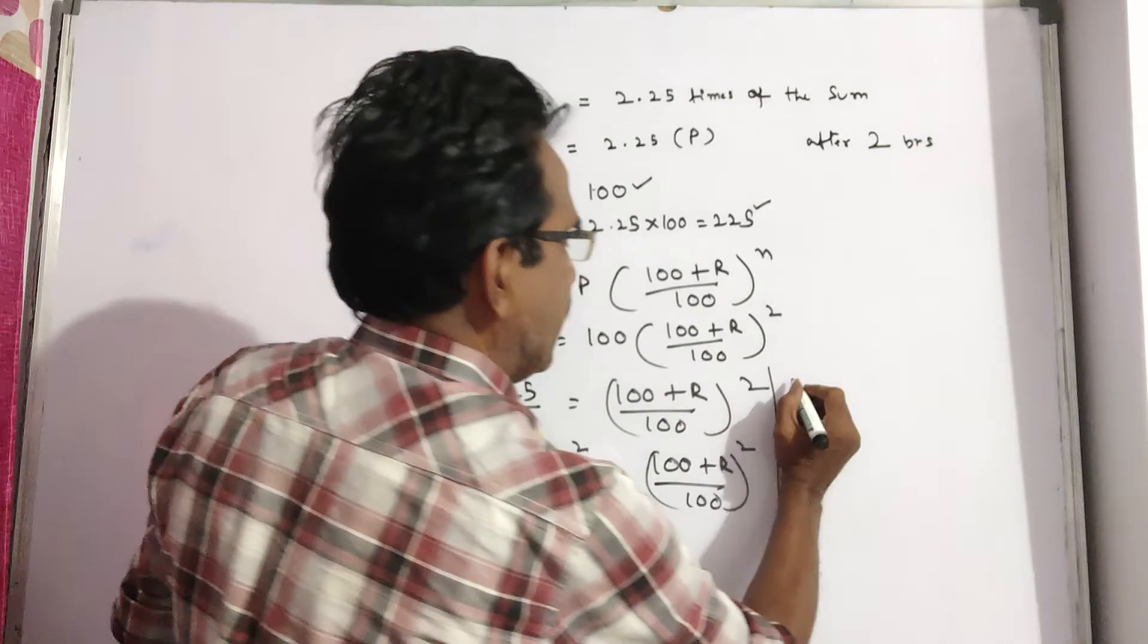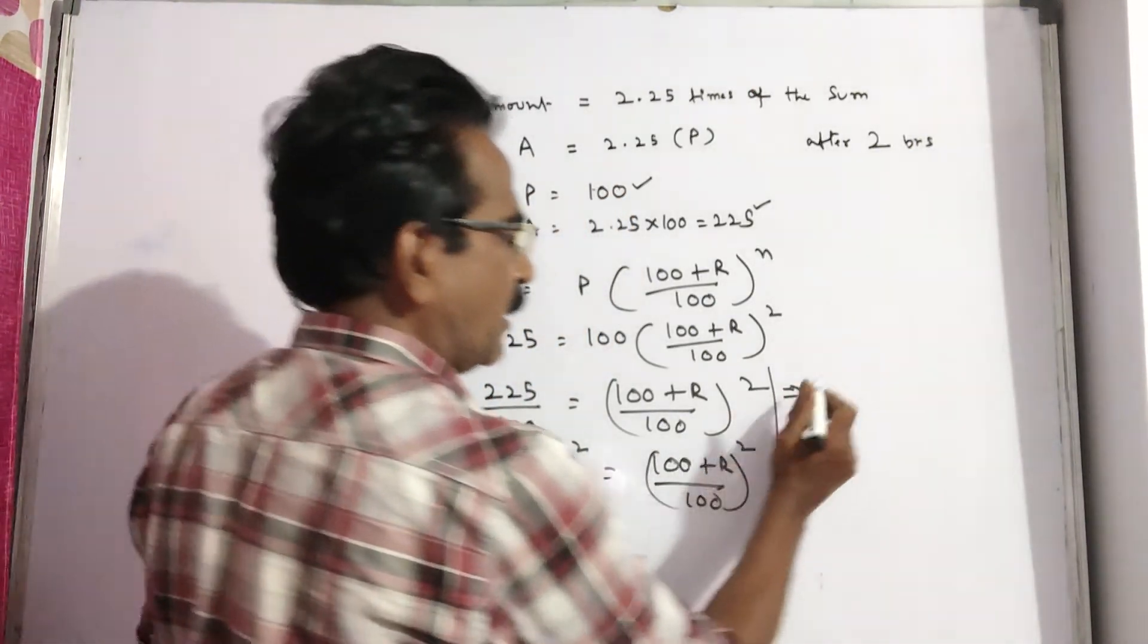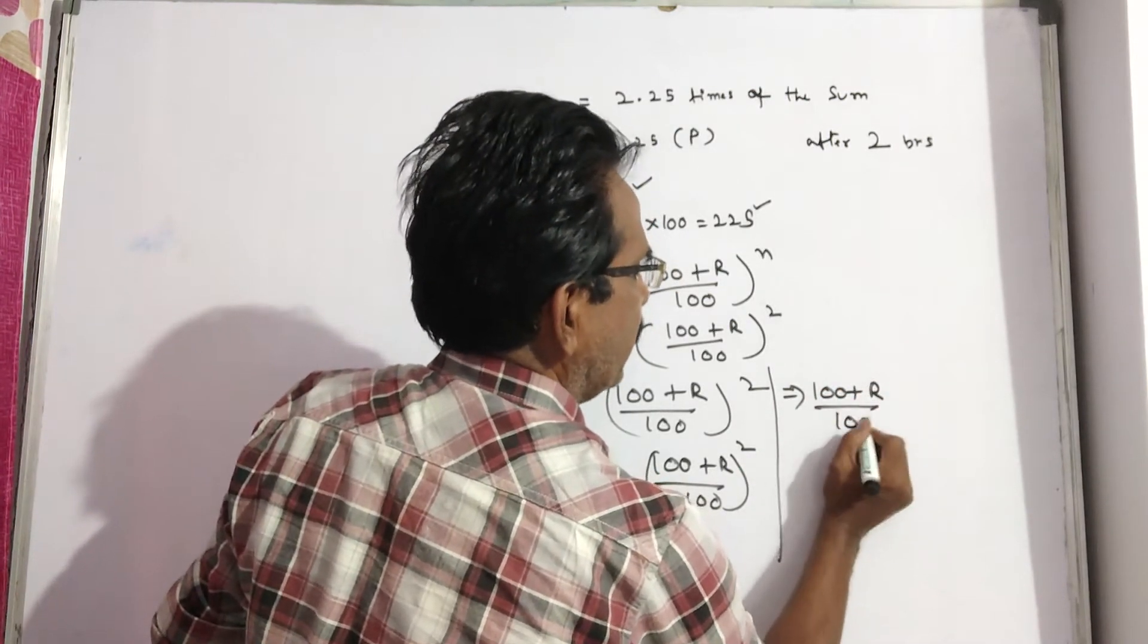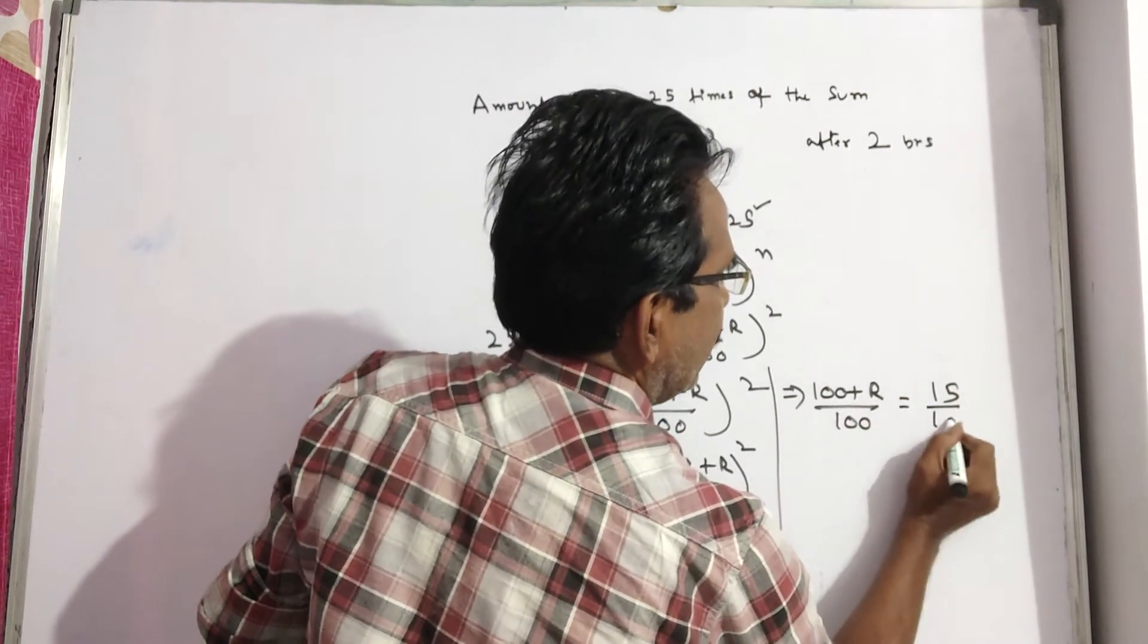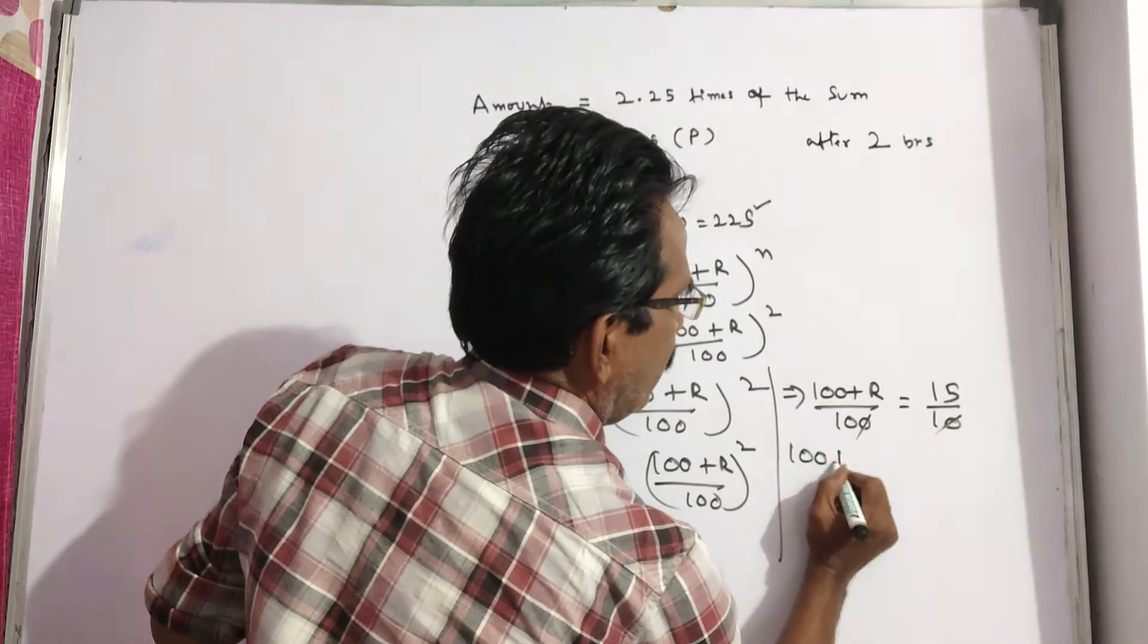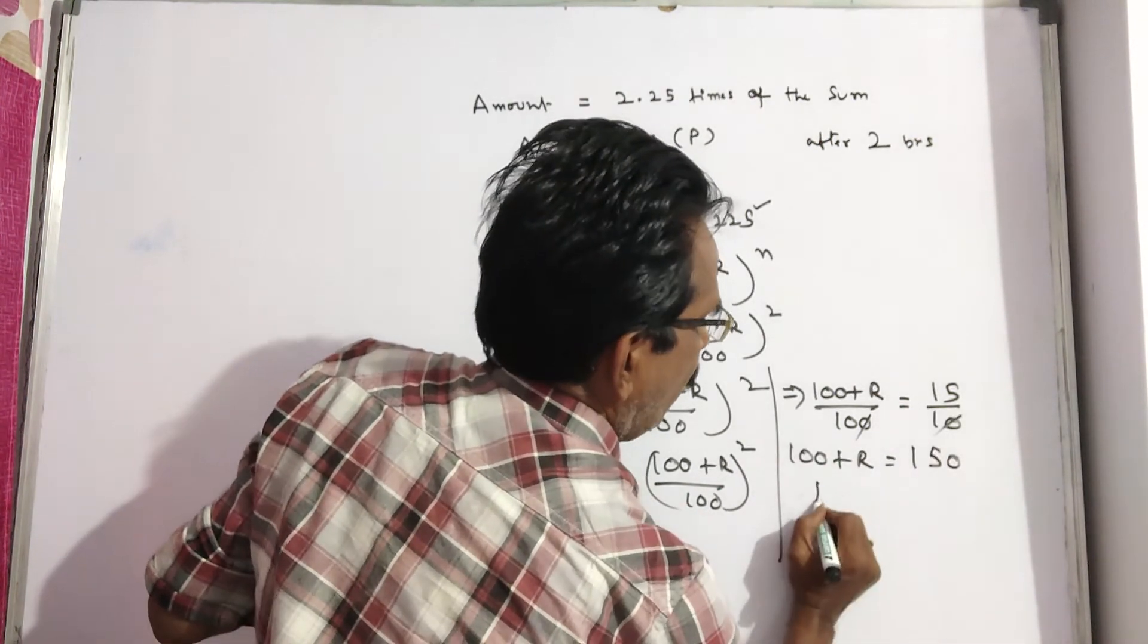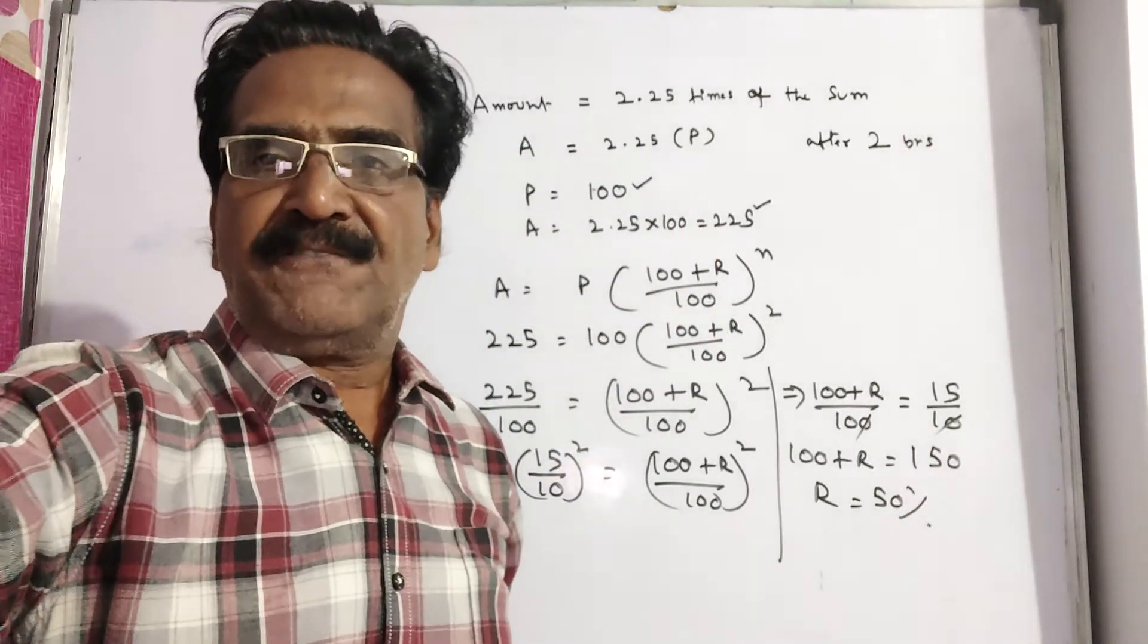By removing squares on both sides, (100 plus R by 100) equals 15 by 10. 100 gets cancelled. 100 plus R is equal to 15 into 10, that's 150. R equals 150 minus 100. R equals 50 percent.